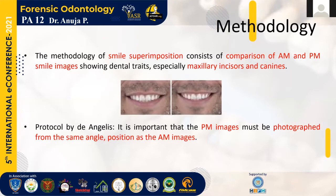The methodology of smile superimposition consists of comparison of ante-mortem and post-mortem smile images showing dental traits, especially the upper incisors and canines. The protocol by D. Anglis suggests it is important that the post-mortem images must be photographed from the same angle and position as the ante-mortem images in order to obtain an accurate identification.